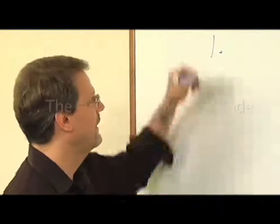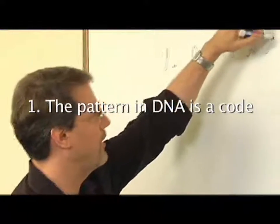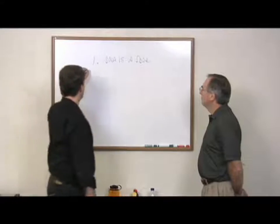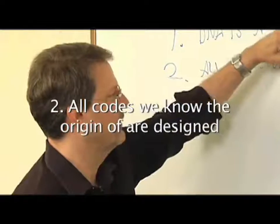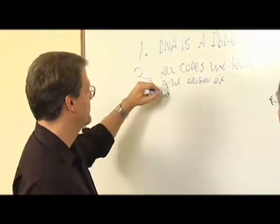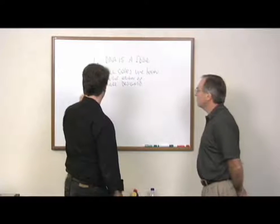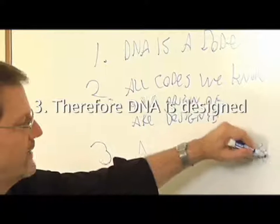And so I'm going to start with the fundamental argument, okay? And it's a three-point syllogism, and it goes like this. It says, one, DNA is a code, okay? The pattern in DNA is a code. Number two, all codes we know the origin of are designed. Okay? And number three, therefore DNA is designed. And that's the argument.